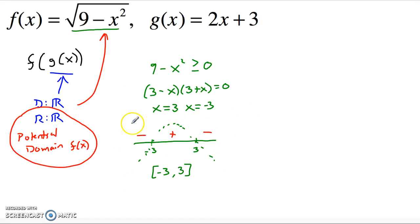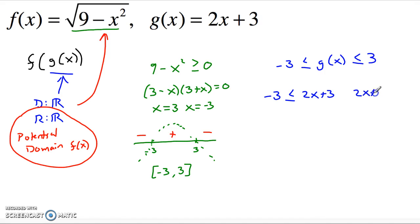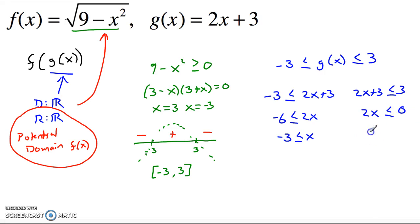The input of f must stay between negative 3 and 3. What determines that input? The output of g, the inside function. So we need negative 3 less than or equal to g of x less than or equal to 3. That means negative 3 less than or equal to 2x plus 3 less than or equal to 3. Solving the left side: subtract 3, get negative 6 less than or equal to 2x, so x is greater than or equal to negative 3. Solving the right side: subtract 3, get 2x less than or equal to 0, so x is less than or equal to 0.